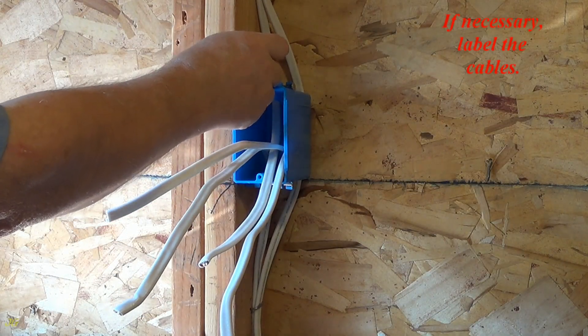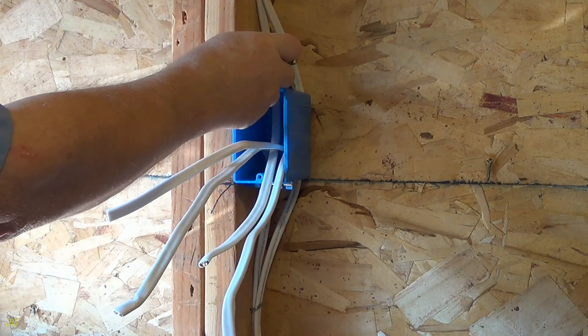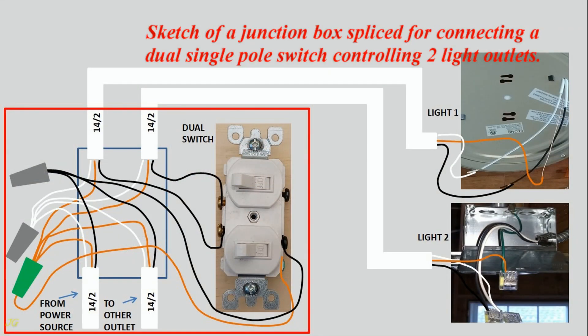If necessary, label the cables. Sketch of a junction box spliced for connecting a dual-single-pole switch controlling two light outlets.